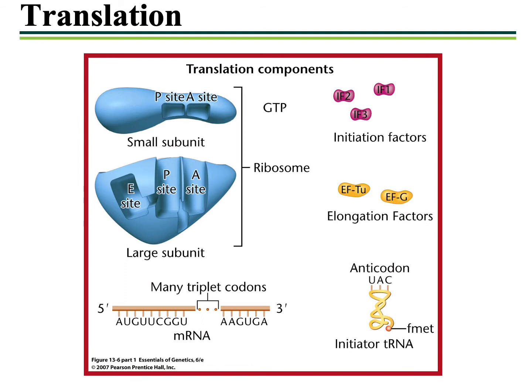Looking back at the ribosome, I want to focus on a couple of additional structures. Specifically, there are caverns or divots within the ribosome referred to, starting from the left, as the E site, in the middle the P site, and on the right the A site. The E site stands for the exit site, where an additional molecule sits temporarily before exiting the ribosome. The P site stands for peptidyl transfer RNA binding site, and the A site stands for aminoacyl tRNA binding site. We will come back to those structural components shortly.